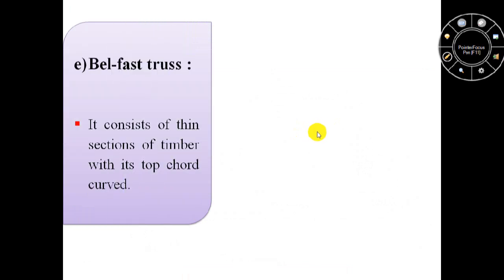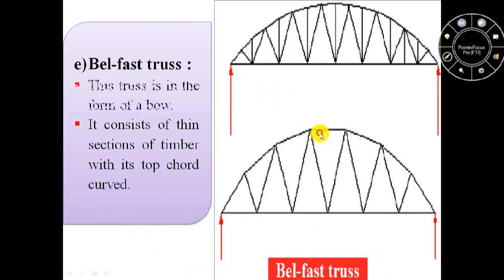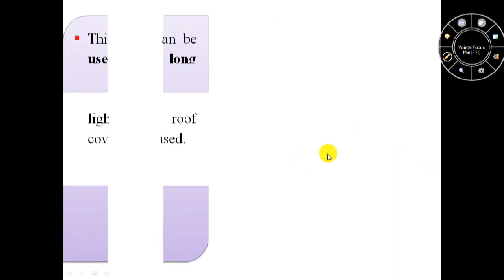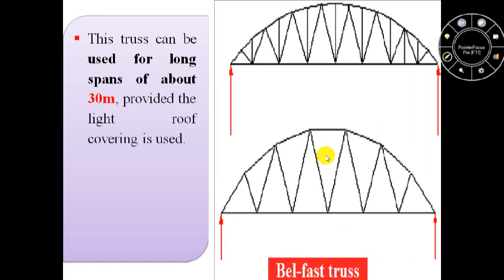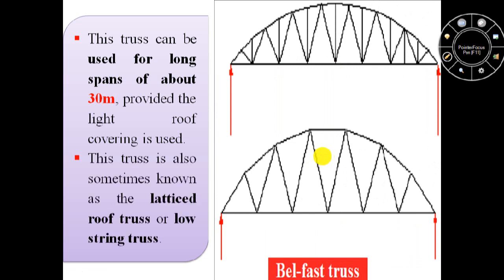The fifth type of truss roof is Belfast truss. This truss is in the form of a bow and it consists of thin sections of timber with its top cord curved. This Belfast truss can be used for long spans of about 30 meters, provided a light roof covering is used. This truss is also sometimes known as the lattice roof truss or low string truss.